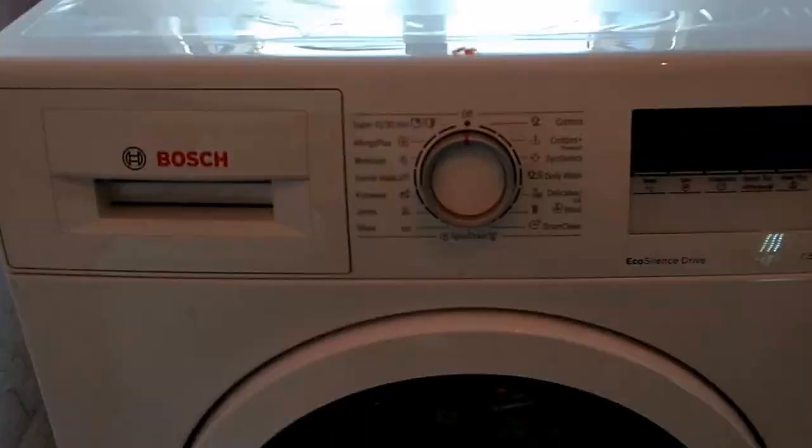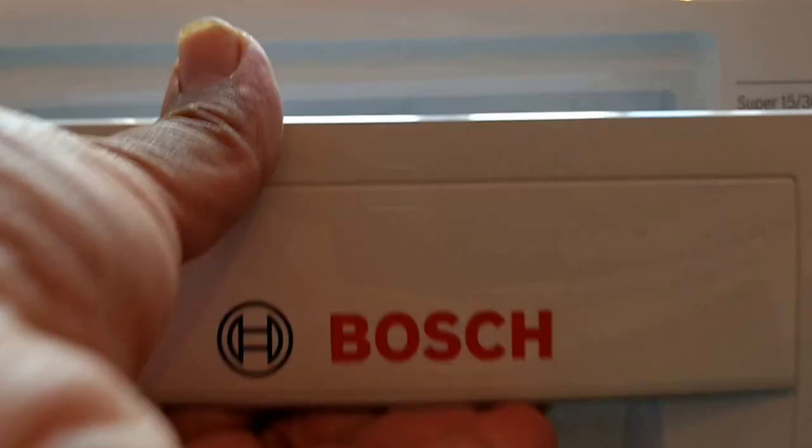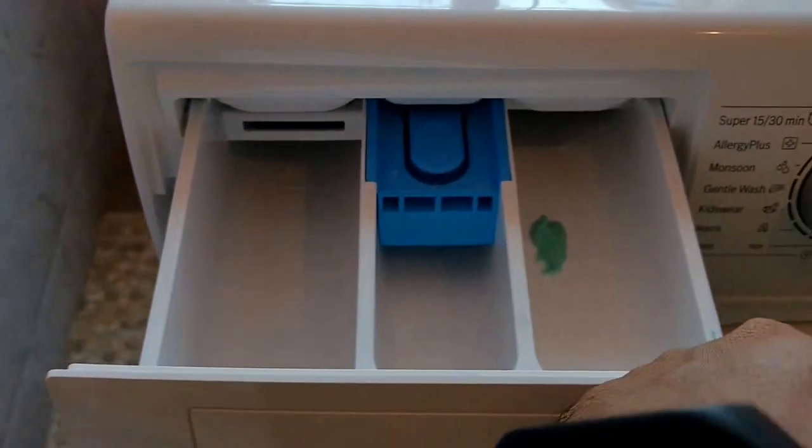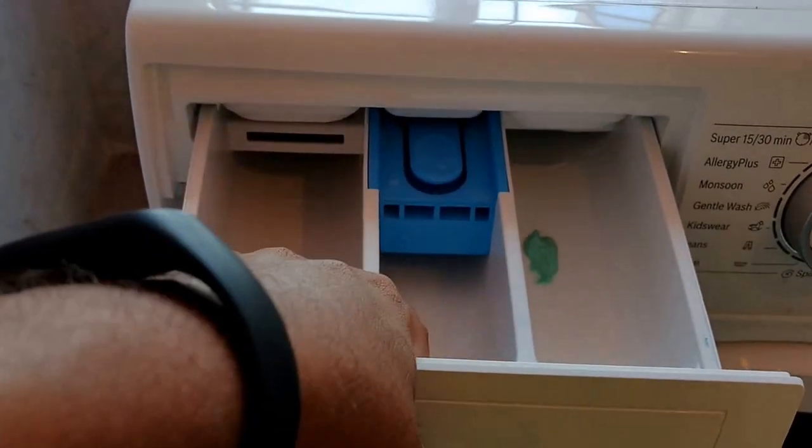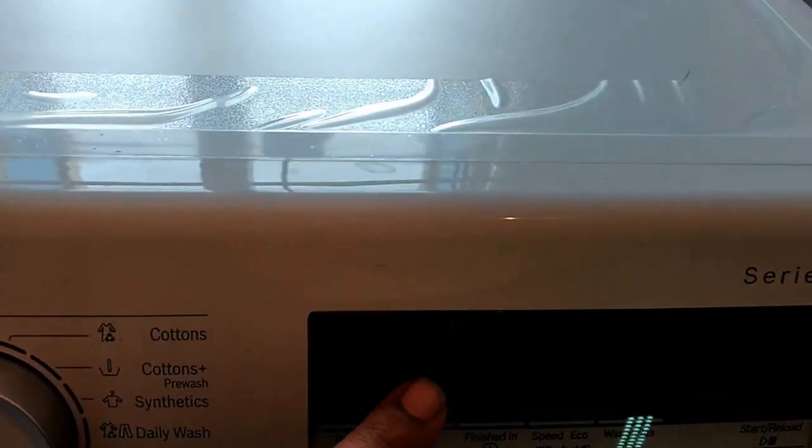Let me start from here. This is the detergent slot, you open this. This is where you add the detergents, and you add your softener here. Let me close it.